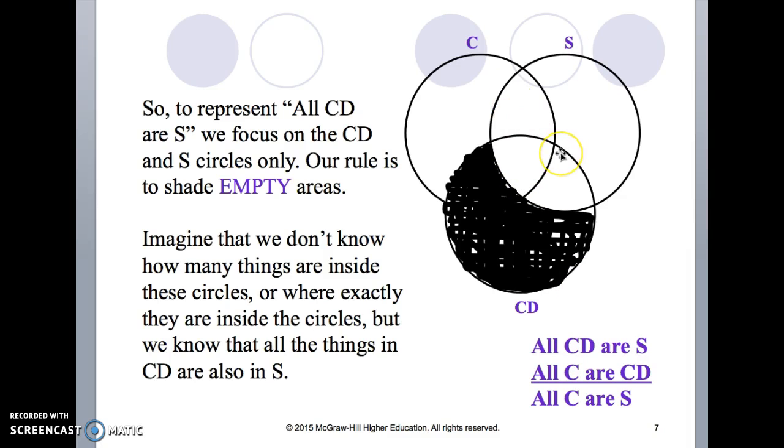Now here the second premise, all C are CD. We're going to be looking next in premise two at the C circle and the CD circle and ignore the S circle.